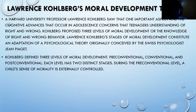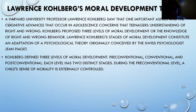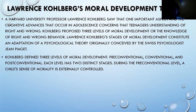We also have Lawrence Kohlberg's moral development theory. Kohlberg, a Harvard University professor, saw that one important aspect of cognitive advances occurs in adolescence — the teenager's understanding of right and wrong. He proposed three levels of moral development. Kohlberg's stages of moral development constitute an adaptation of a psychological theory originally conceived by Swiss psychologist Jean Piaget. Kohlberg defined the three levels as: pre-conventional, conventional, and post-conventional, with each level having two distinct stages.